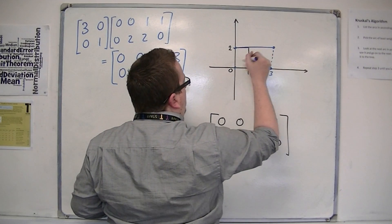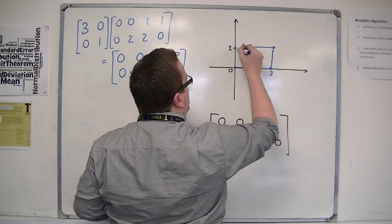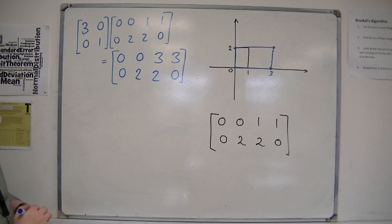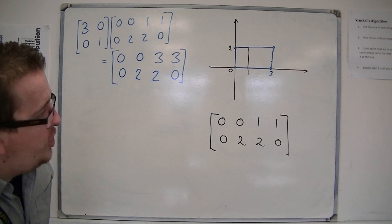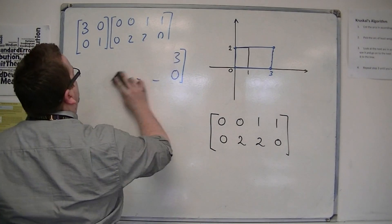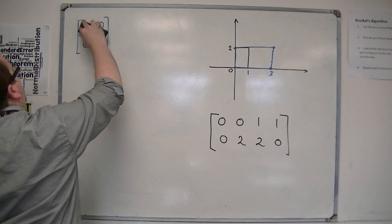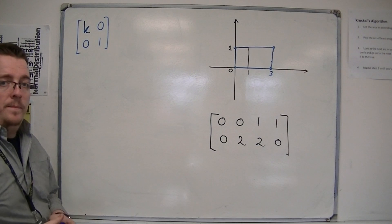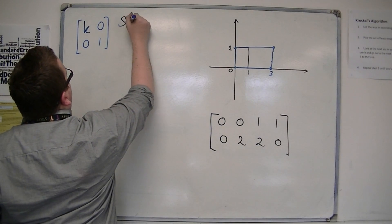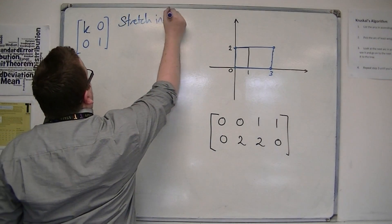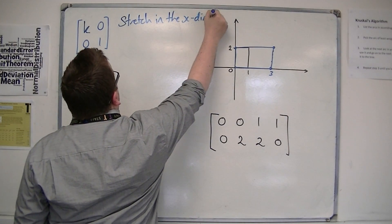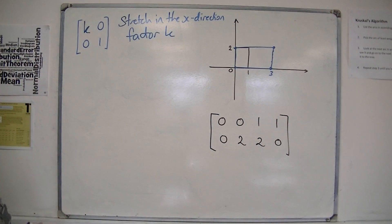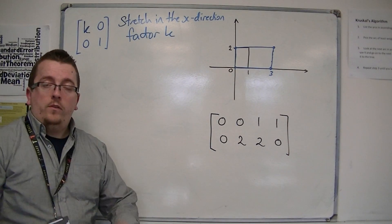What's happened is that my rectangle has been stretched in the x-direction by a factor of 3. We can generalise this matrix: instead of [3,0;0,1], we write [k,0;0,1]. This gives a stretch in the x-direction by factor k.